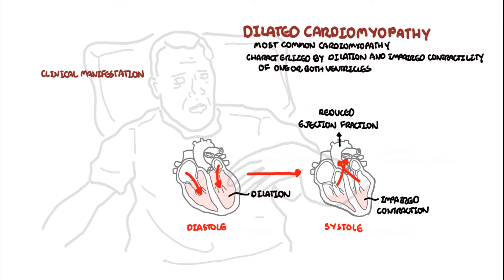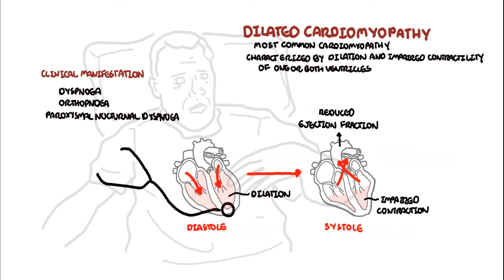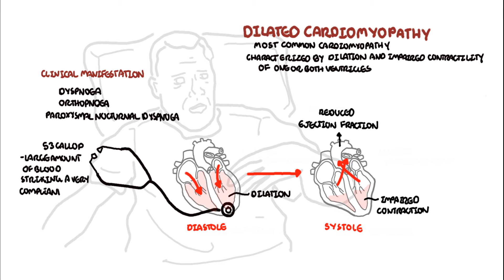The clinical features of dilated cardiomyopathy include symptoms of heart failure such as dyspnea, orthopnea, and paroxysmal nocturnal dyspnea. Clinically, there is the S3 gallop — the most specific sign for heart failure. The S3 sound occurs just after S2 when the mitral valves open, allowing passive filling of the left ventricle. It is produced by the large amount of blood striking a very compliant left ventricle.